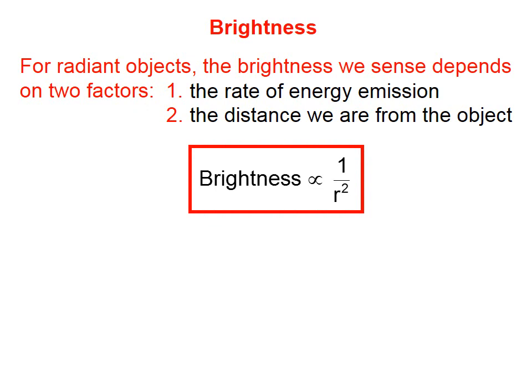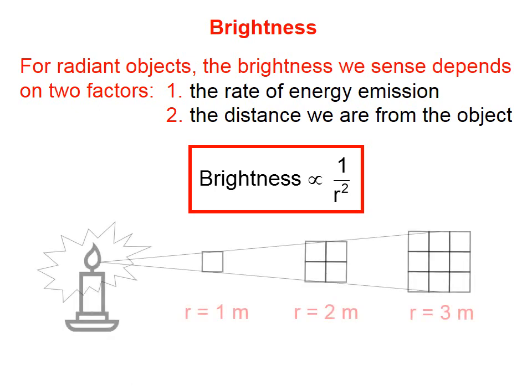Brightness is inversely proportional to the square of the distance between the observer and the source. So r is the distance between the source of light and the observer.